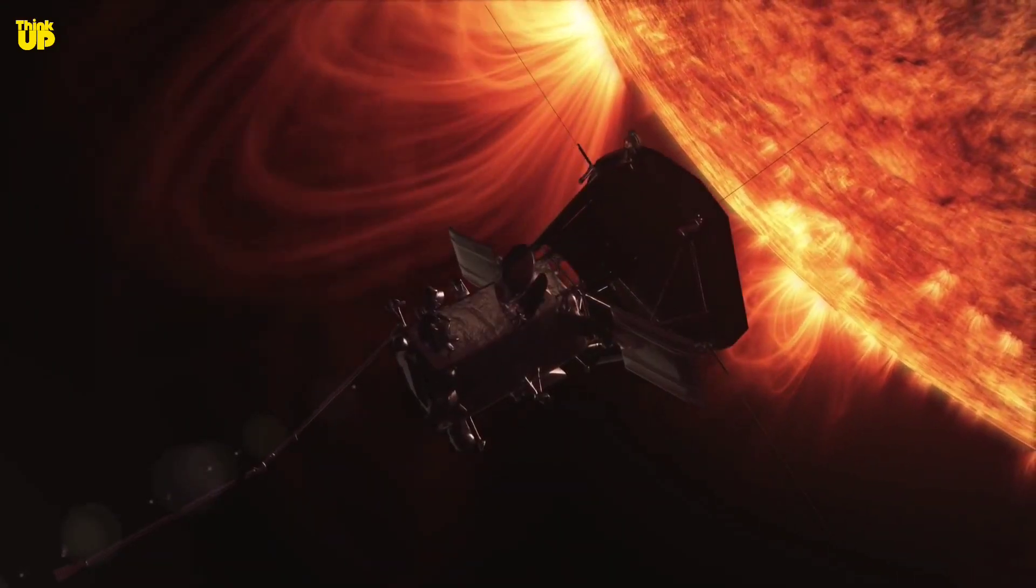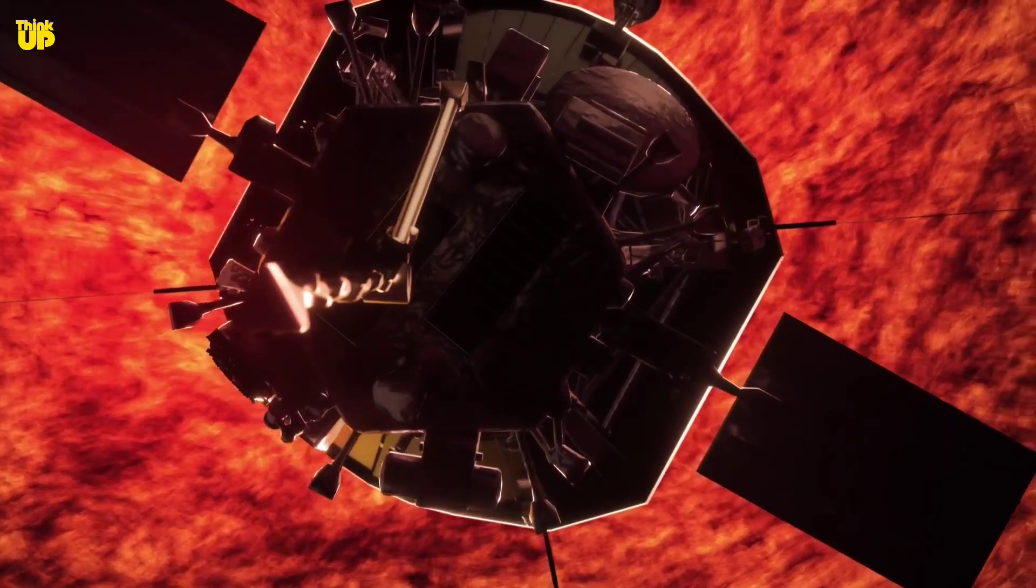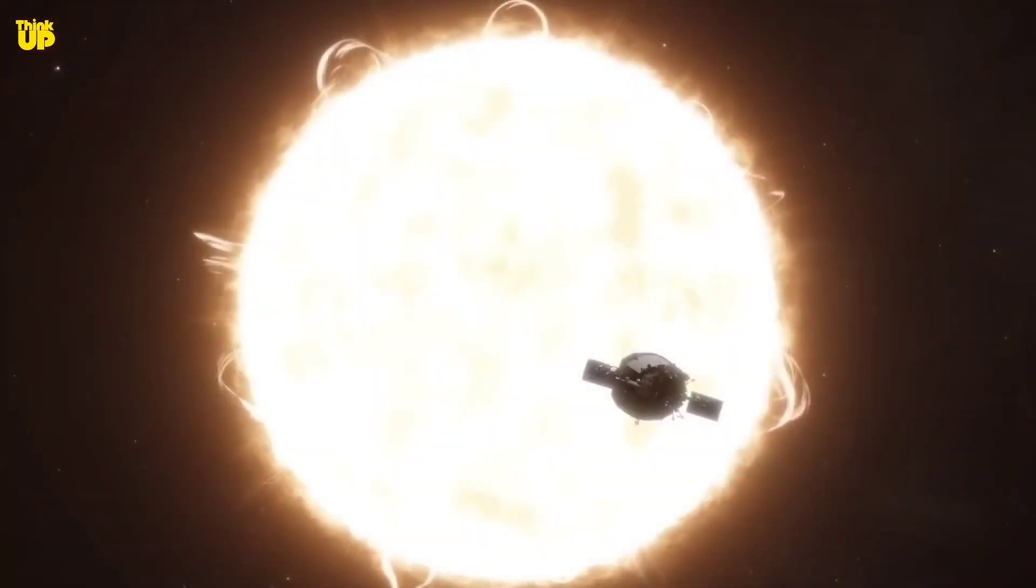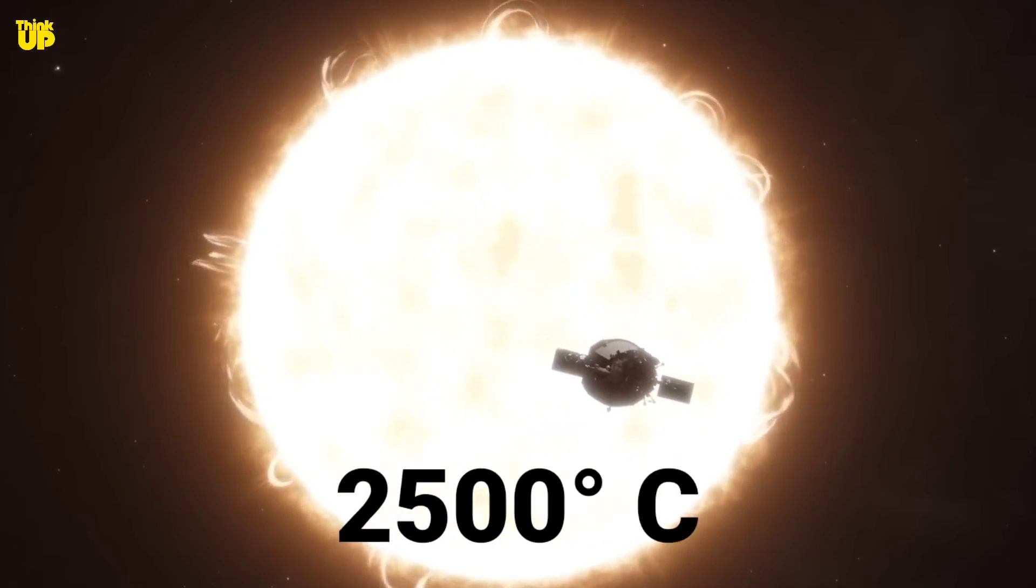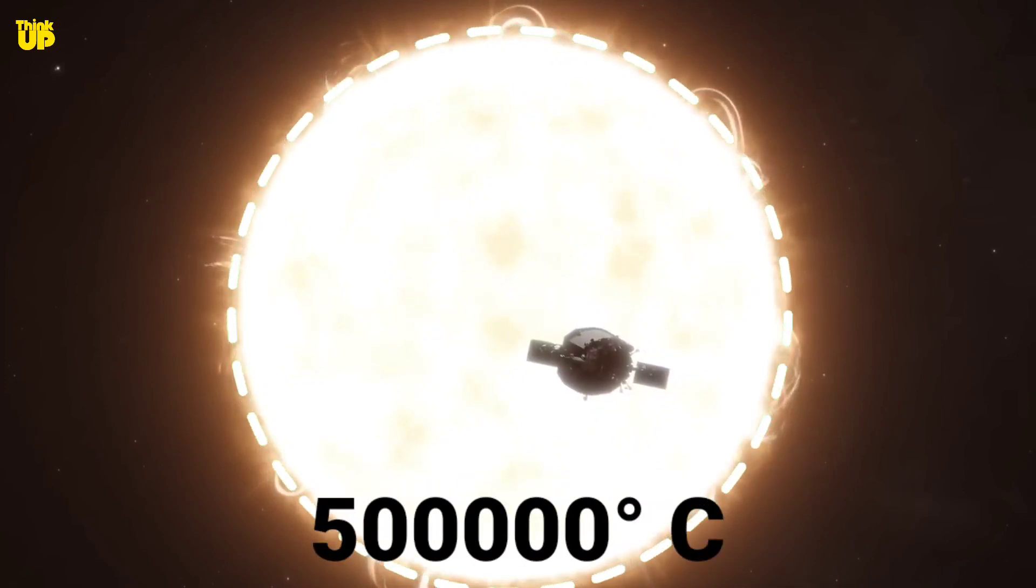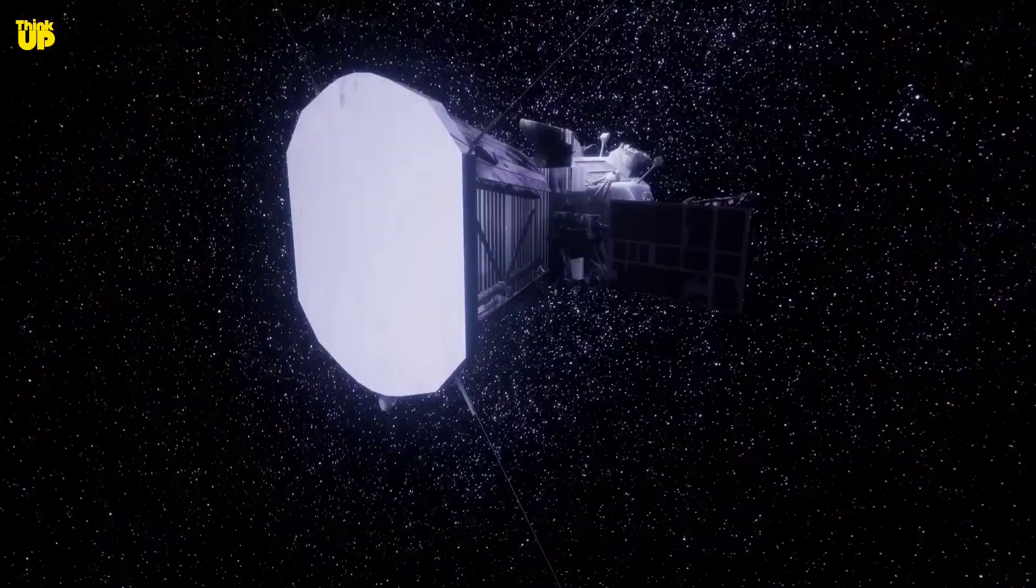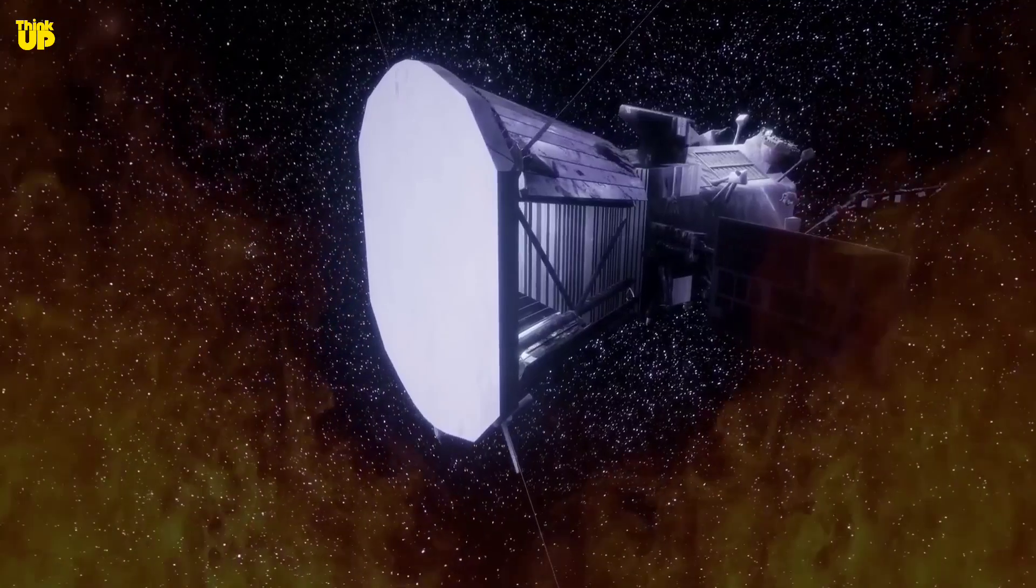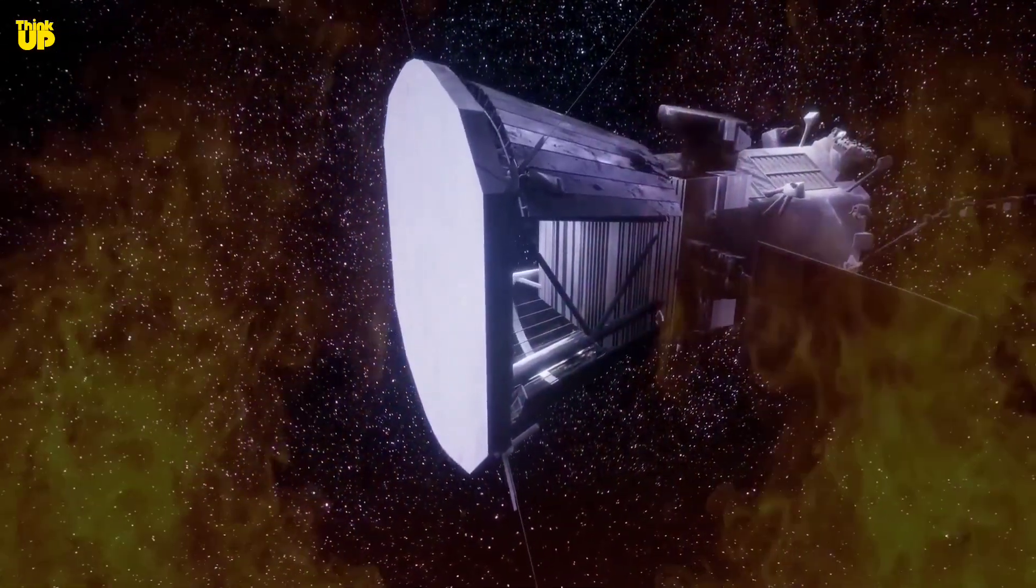Apart from the heat shield, the rest of the Parker Solar Probe is designed to be in the shield's shadow at all times. Despite all these measures, the Parker Probe can withstand a maximum temperature of 2,500 degrees Celsius, while the temperature of the corona is 500,000 degrees Celsius. However, the reason for the probe's ability to tolerate such extreme heat is also easy to understand.